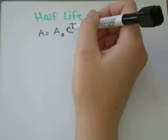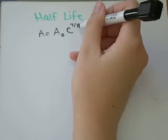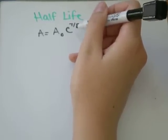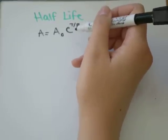t is the amount of time in years. And p is how long it takes to double, triple, half, whatever your question is dealing with.